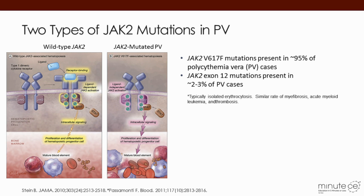There is another JAK2 mutation called the JAK2 exon 12 mutation. This is only present in about 2 to 3% of PV cases, and typically these patients present with isolated erythrocytosis, but have a similar rate of transformation to myelofibrosis, acute myeloid leukemia, or thrombosis.